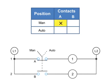An X is placed in the table if a contact is closed in any position. An O is used to depict that a contact is open. Thus, if the selector switch is in the MAN position, A is X, or closed, and B is O, or open.